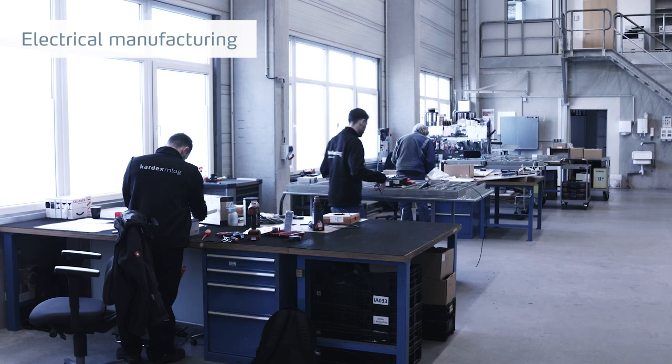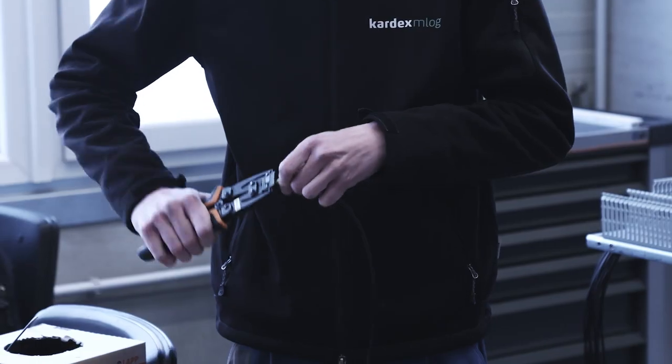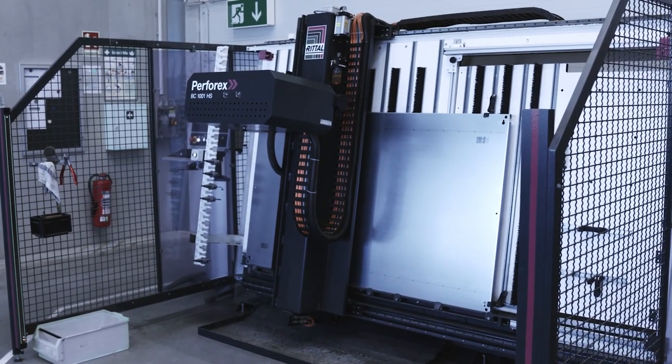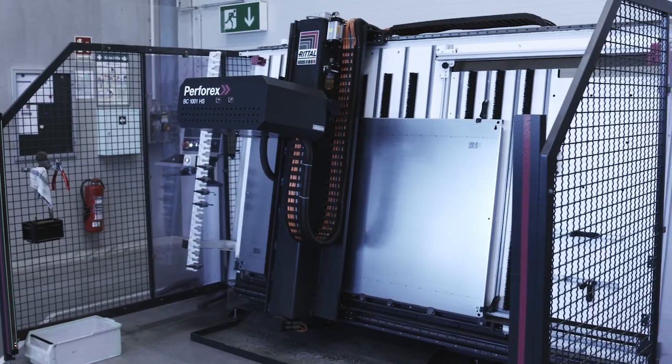In the electrical manufacturing area, all control boxes, distributors, and control panels are manufactured for our machines and plants. In our machining shop for assembly plates, all required drill holes, threading, and contours for the switching devices are made.